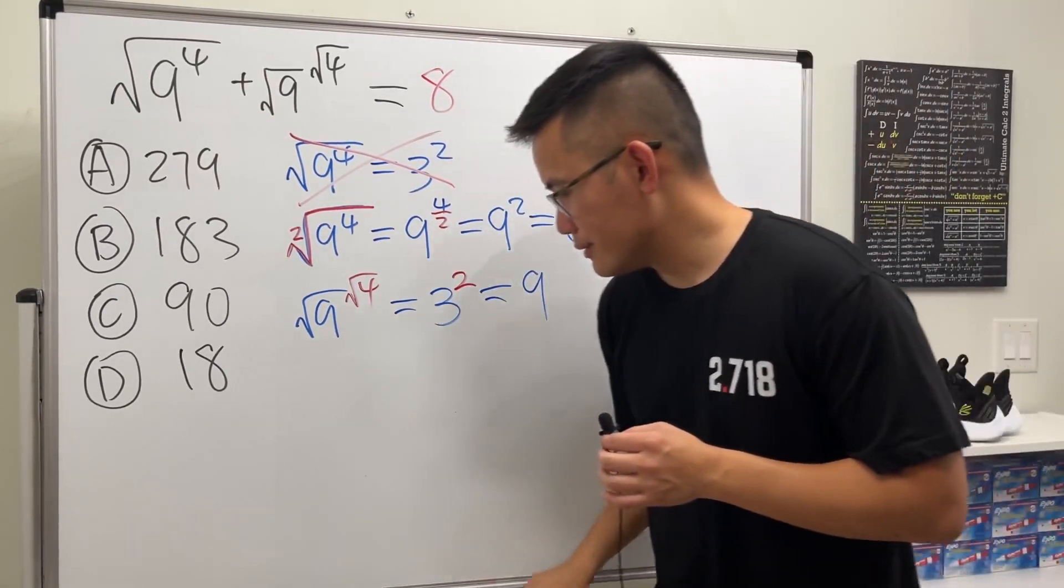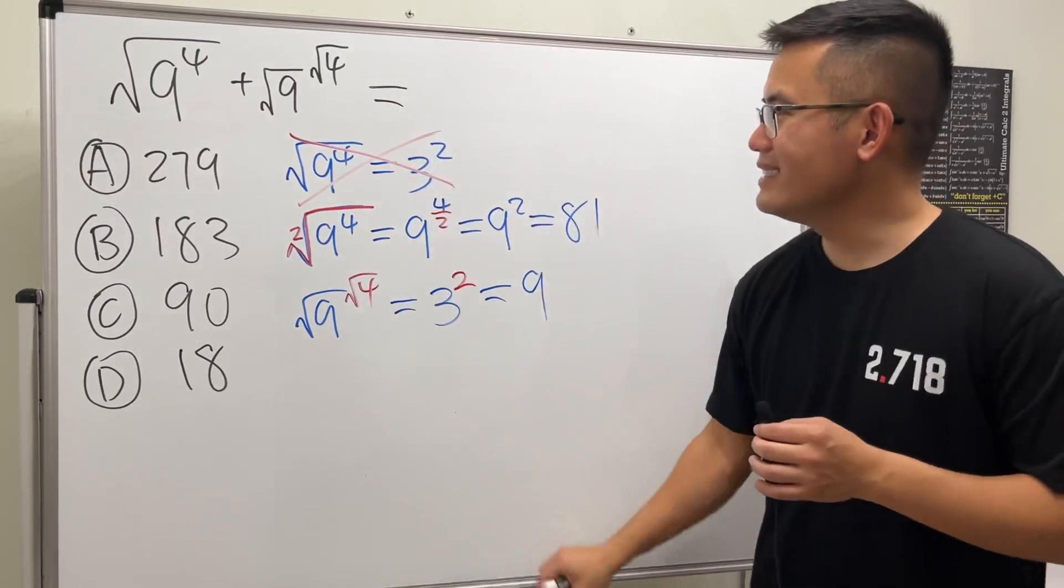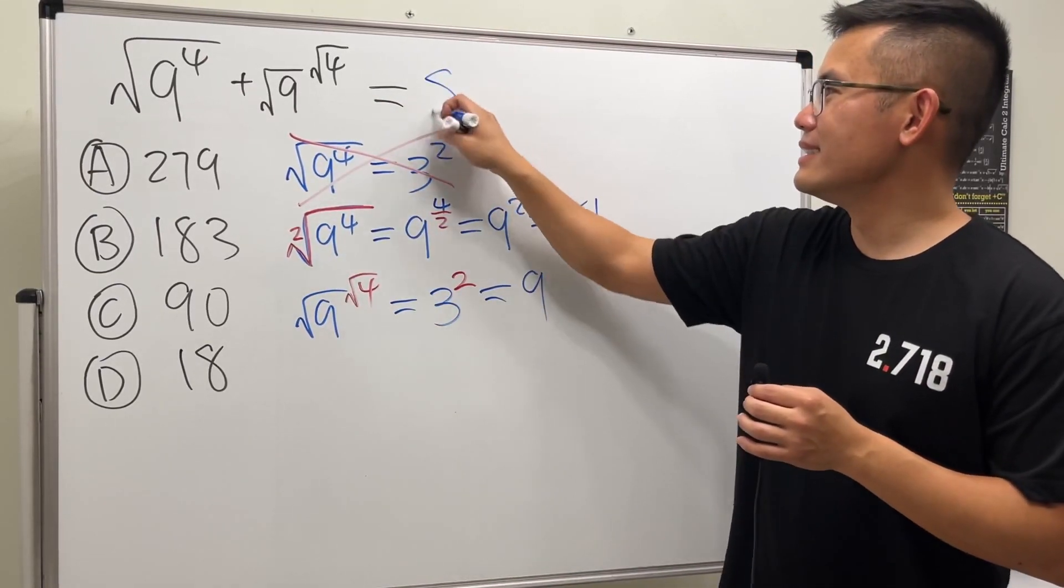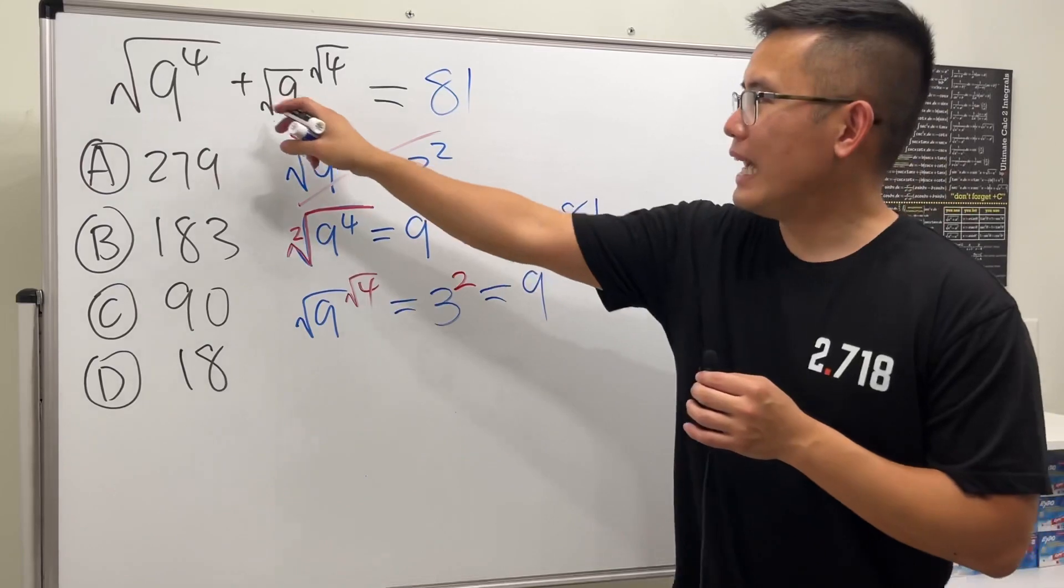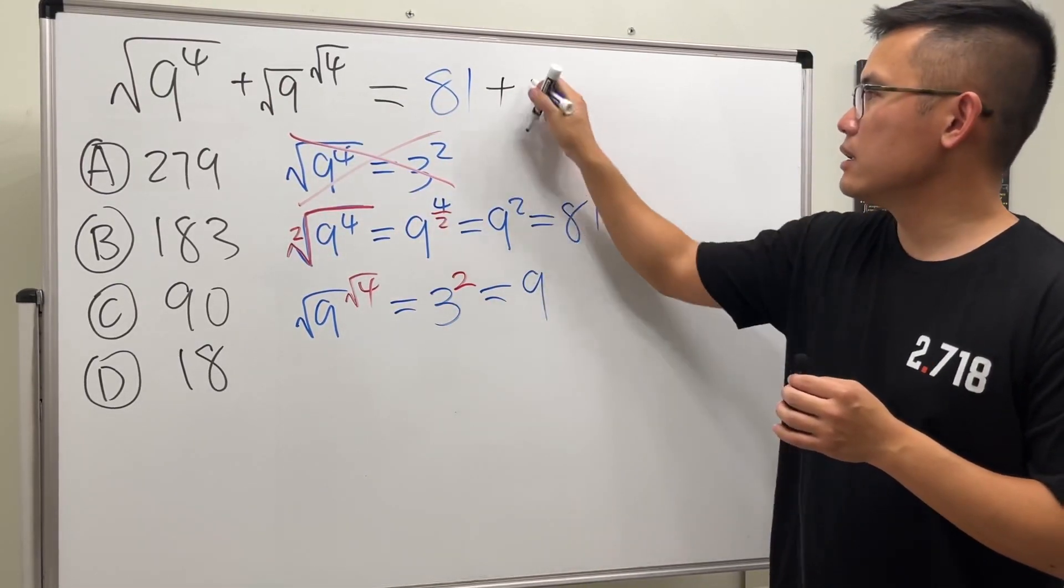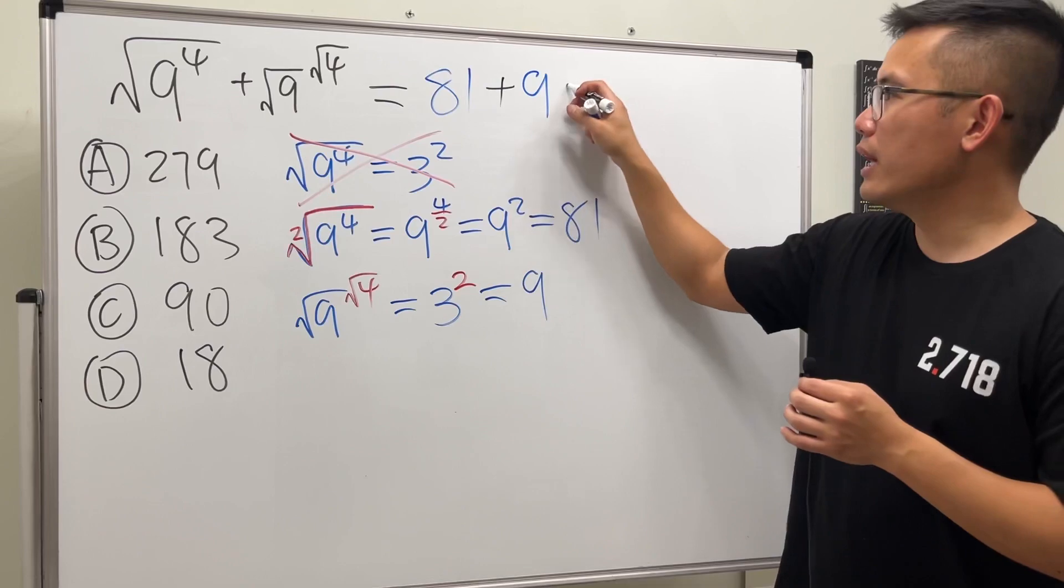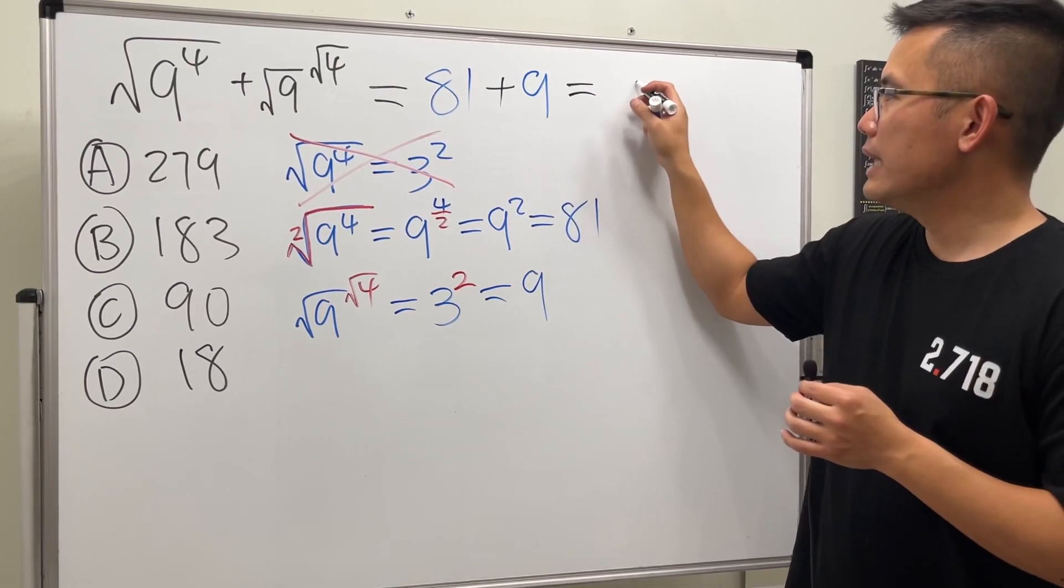The first one is 81, and then we add the second one, which is 9. All together, we get 90.